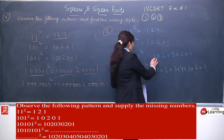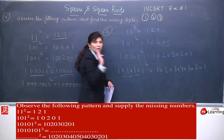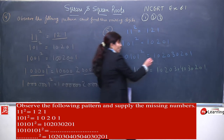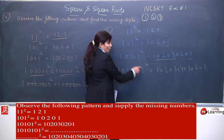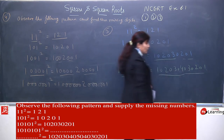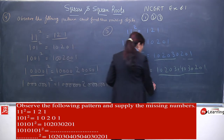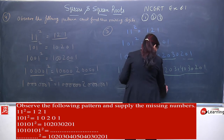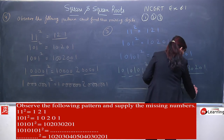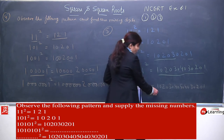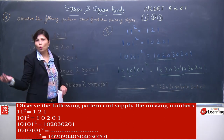When 10101 was there, the answer went up to 3, then decreased. When 1010101 is there, the answer should go up to 4. In this pattern, count how many 1s are in the number: for 10101, there are three 1s, so the pattern goes to 3; for 1010101, there are four 1s, so it goes to 4. The right part given is 10203040504030201 — meaning 5 is the peak, it goes 1 to 5 then back down to 1.